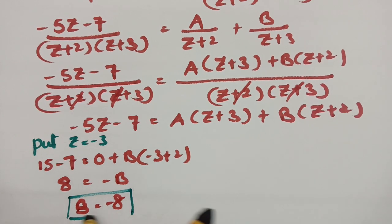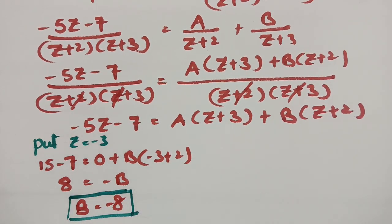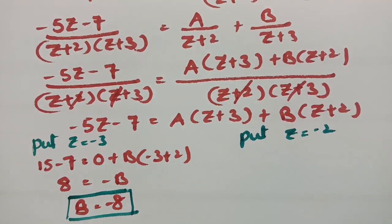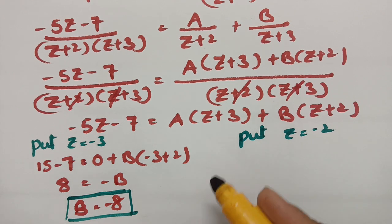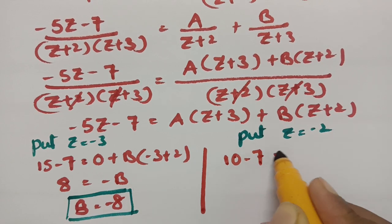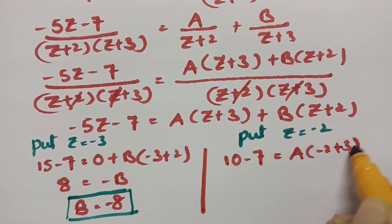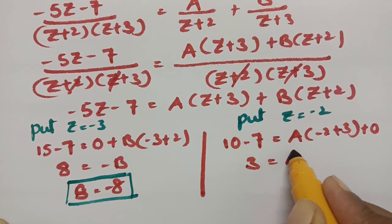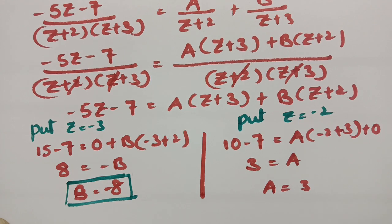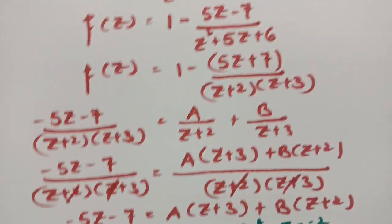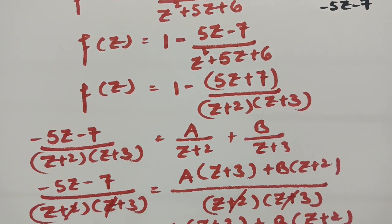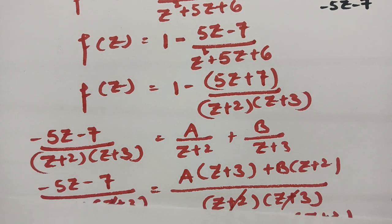Now putting z = -2: we get (-2)(-5) - 7 = A(-2 + 3) + 0, which gives 10 - 7 = A(1), so 3 = A. Therefore A = 3 and B = -8. We substitute these values of A and B to obtain the function.